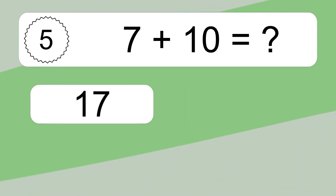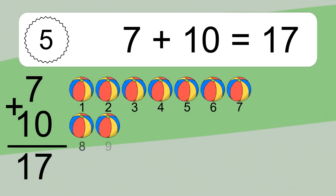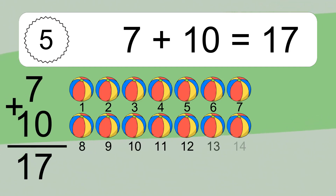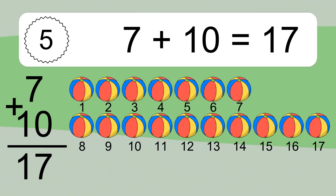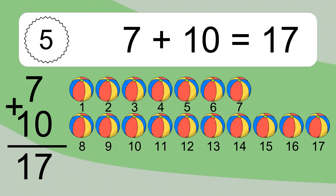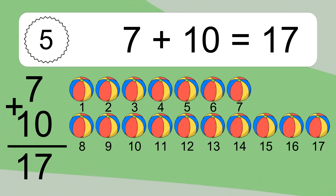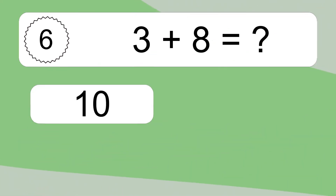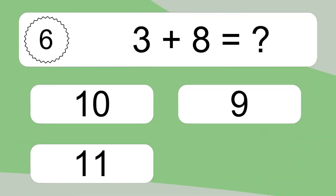7 plus 10 equals what? 7 plus 10 equals 17. Let's count it. 1, 2, 3, 4, 5, 6, 7, 8, 9, 10, 11, 12, 13, 14, 15, 16, 17.